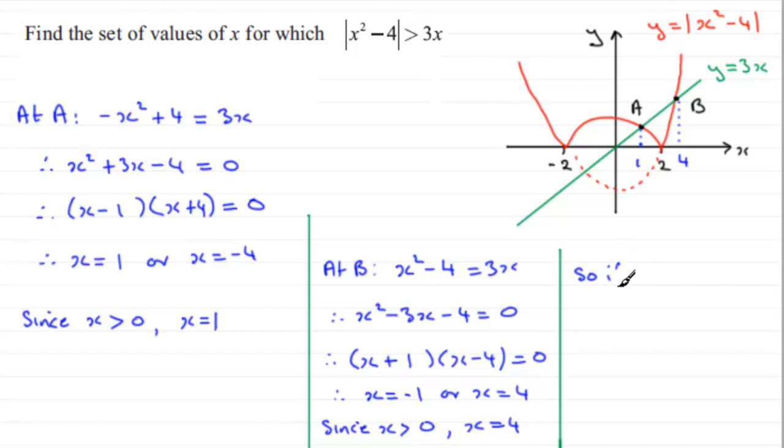If the mod of x squared minus 4 is greater than 3x, then what we have got is that x must be less than 1, or x must be greater than 4. Two distinct sets of values. Try not to use the word and here. It's an or situation. So I hope that's how we can take the graphical method then for solving this particular modulus inequality.